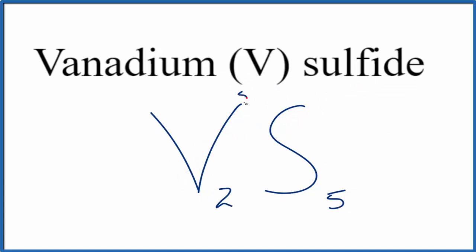We know the vanadium is 5+ from this Roman numeral, and we know sulfur is 2- from the periodic table. 5 times 2 minus, that's 10 minus. 2 times 5 plus, that's 10 plus. These two numbers add up to zero, giving us a net charge of zero. So this is the formula for vanadium (V) sulfide.